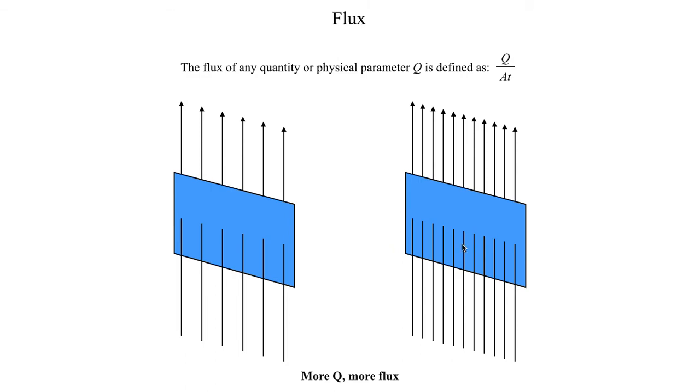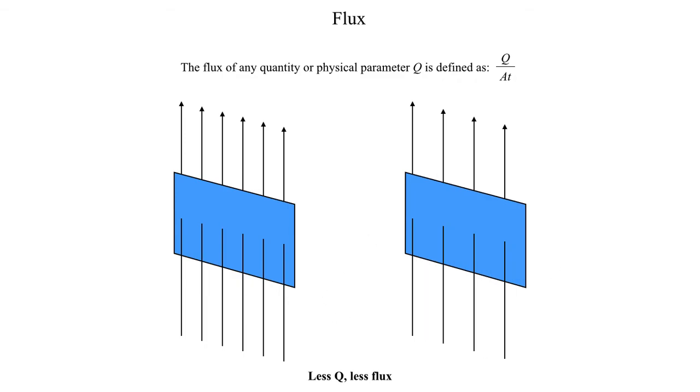Now, I can increase the flux by adding more of the physical parameter. Here I have six arrows, meaning I have six arrows worth of Q, any physical parameter. Over here on the right-hand side, I have 12 arrows. Since I have more of my physical quantity, I might have more mass flowing through the same unit area at the same rate of speed. Since I have more stuff flowing through that same area at the same speed, then I must have more flux. This diagram illustrates how increasing the amount of Q, the amount of physical stuff that I have flowing, by increasing that amount, I increase the flux.